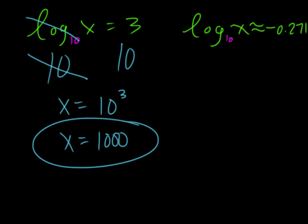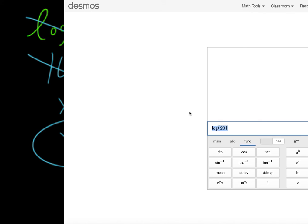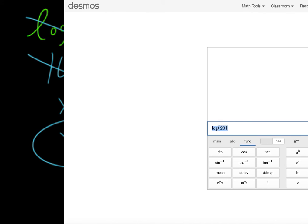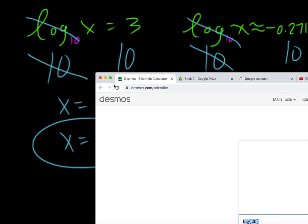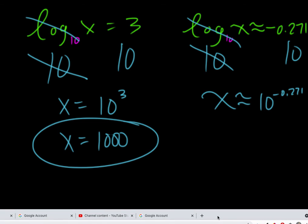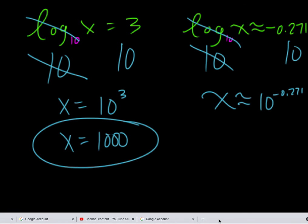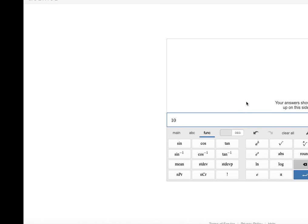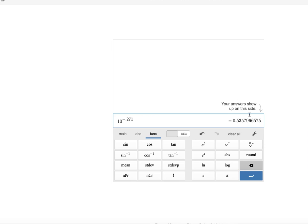Over here, since the base is 10, we do a big 10, big 10, these cancel, so x is approximately 10 to the negative 0.271, and we could plug that into a calculator. We say 10 and then raise to that power, and we see that that's our answer.